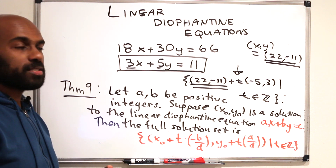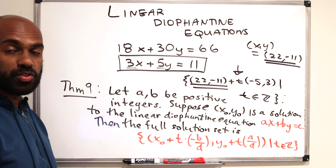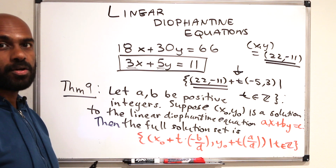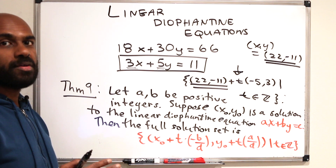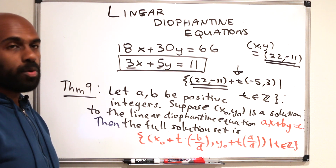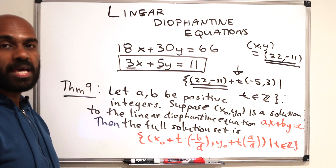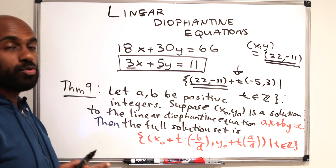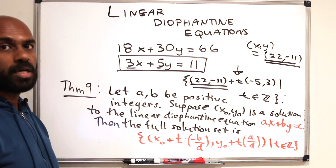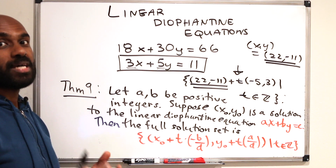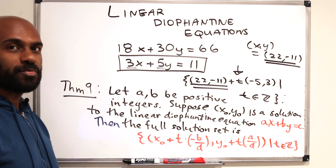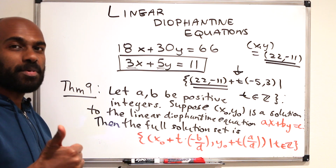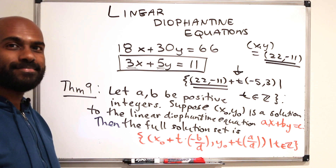We now know how to solve linear Diophantine equations in two variables, which is a great step toward the RSA encryption algorithm. Next, we'll take a brief detour to cover mathematical induction before diving into prime numbers and their properties. I hope you enjoyed today's video — please click the like button and subscribe to the channel if you want to see more videos like this.